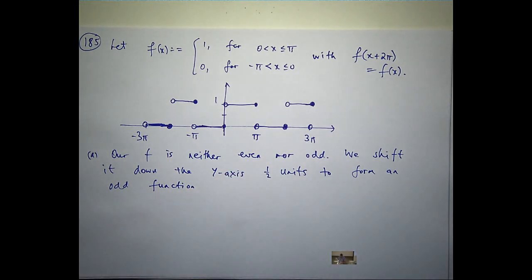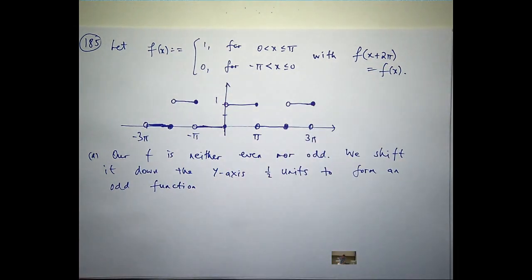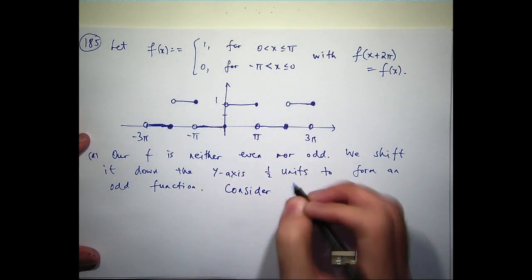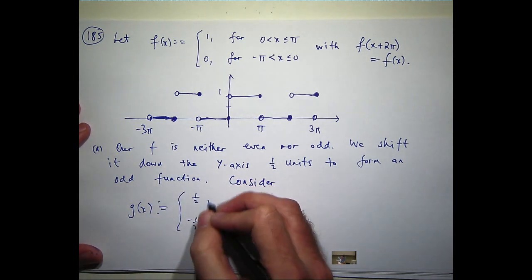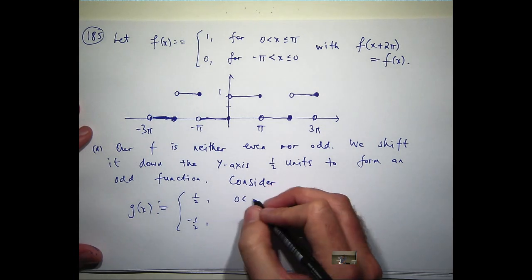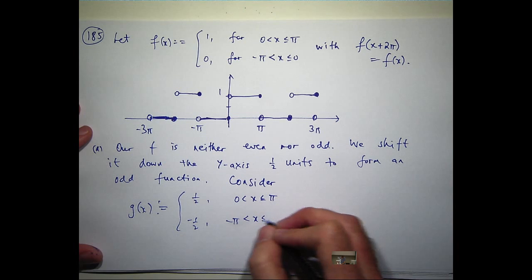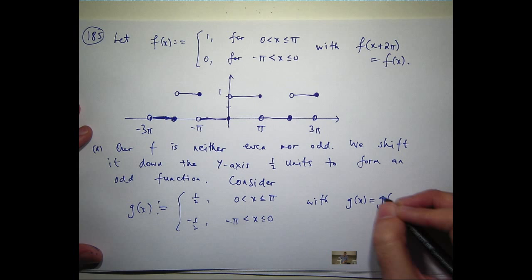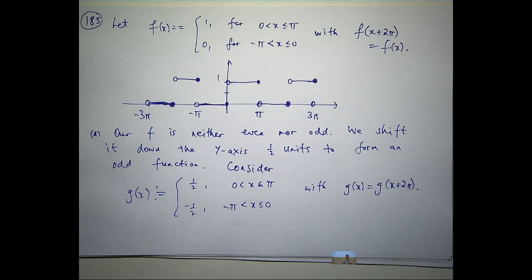Very cool. So our f is neither even nor odd. We shift it down the y-axis one half units to form an odd function. So we're going to consider a new function g, that is basically just this function shifted down half a unit, and the same periodicity.